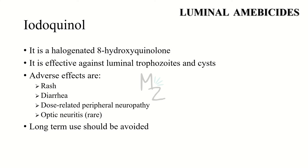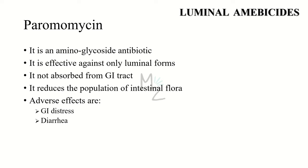Now let's talk about the luminal amebicides. The first one is iodoquinol, a halogenated 8-hydroxyquinolone effective against luminal trophozoites and cysts. Adverse effects of iodoquinol include rash, diarrhea, and dose-related peripheral neuropathy including rare optic neuritis. Long-term use of this drug should be avoided.